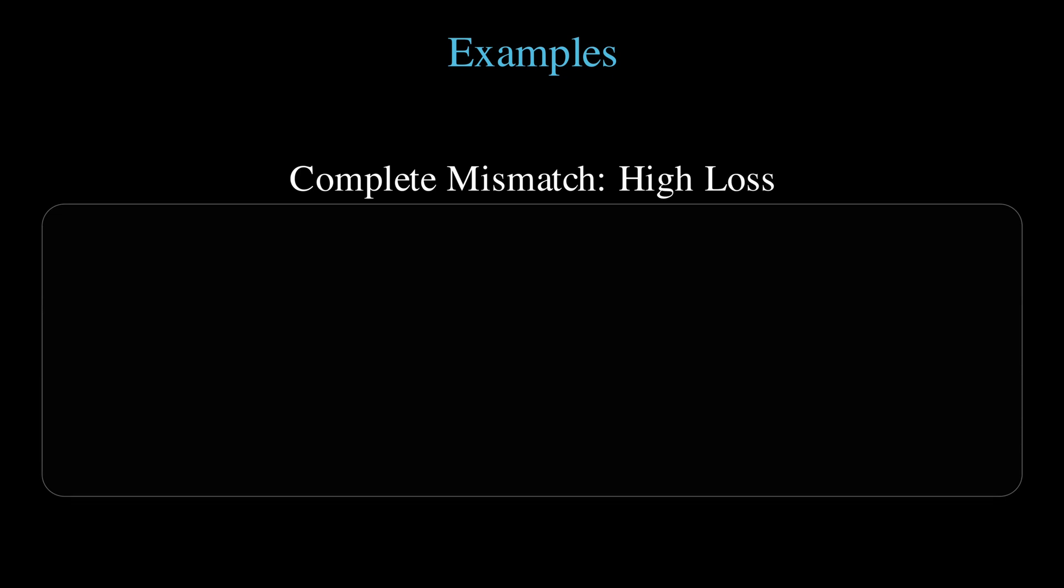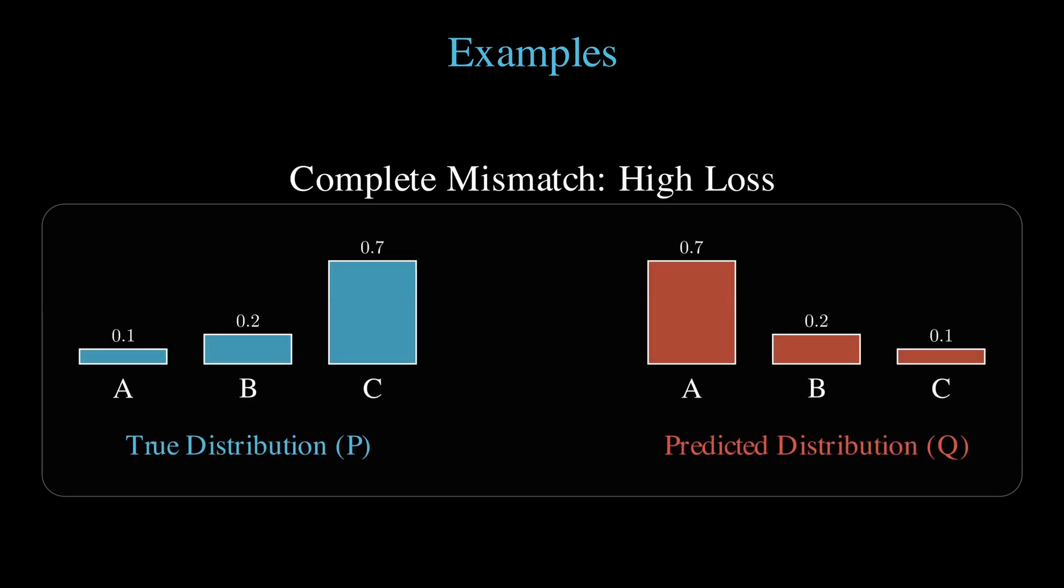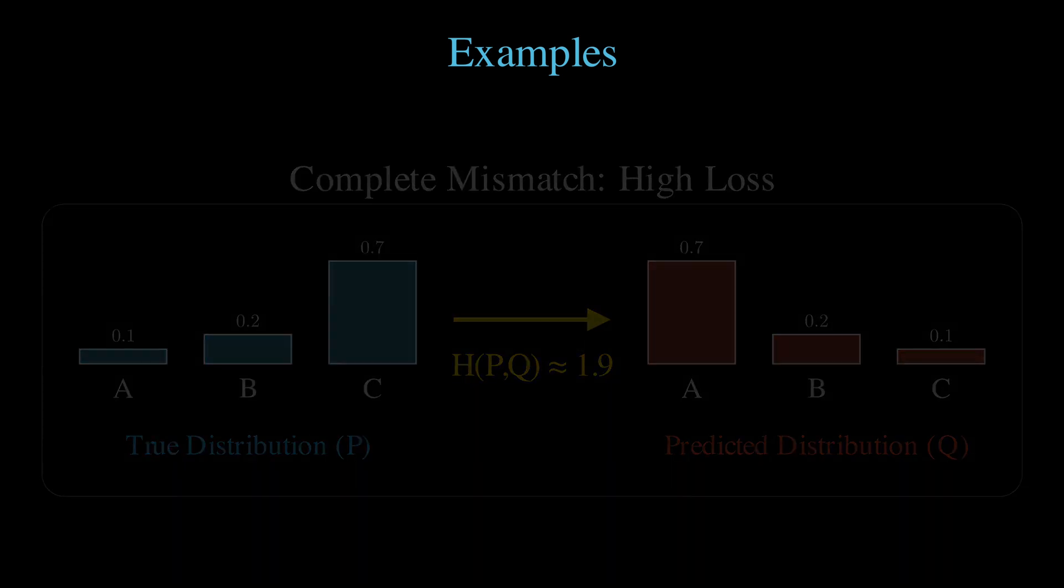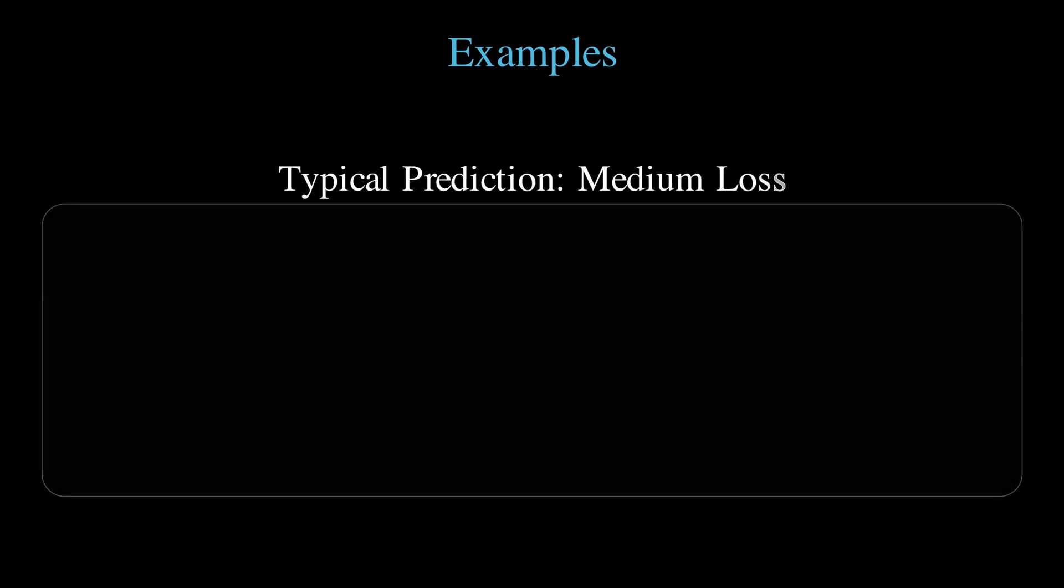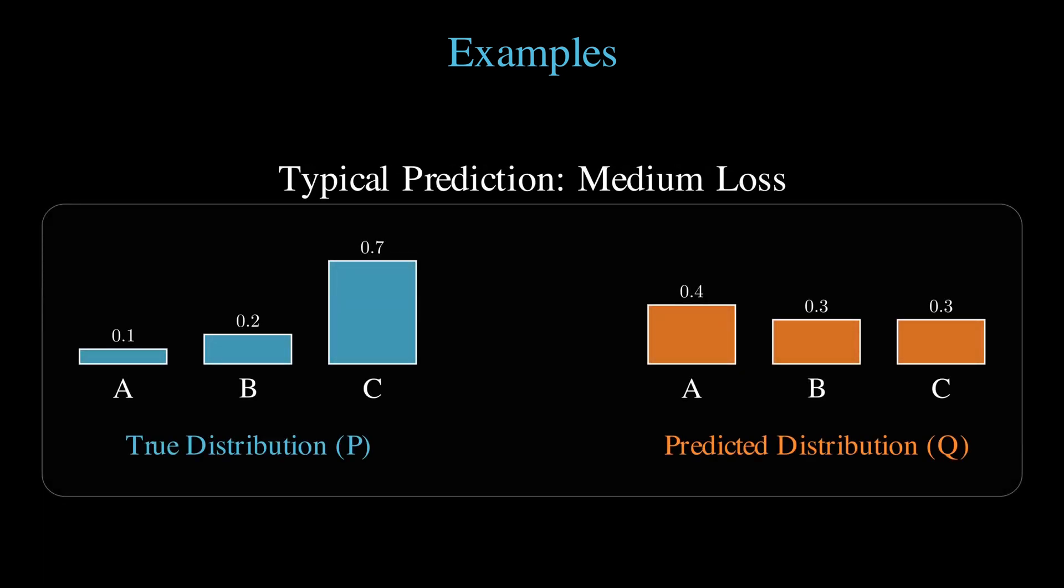If it's completely wrong, giving 100% to the wrong class, cross-entropy would be extremely high, approaching infinity. For a typical case where our model is partially right but uncertain, we'd get a moderate value.